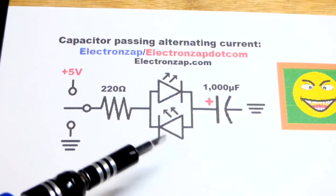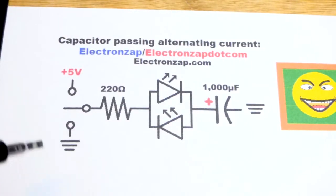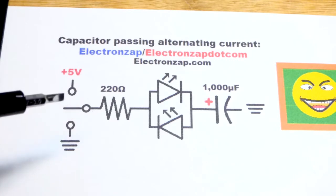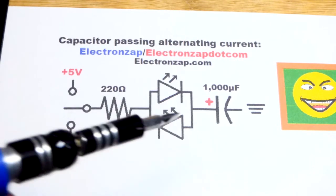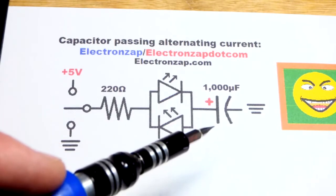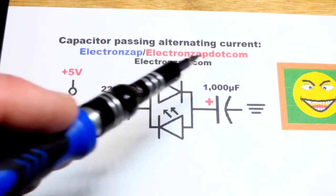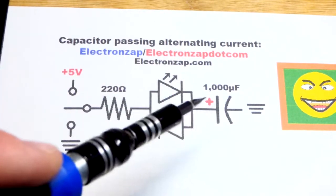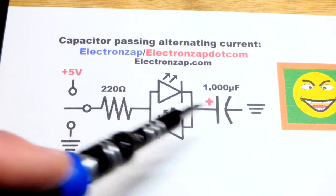So now in this video we're going to build a circuit. This is really just a demonstration circuit, not really practical at all, other than helping you visualize that a capacitor passes alternating current while blocking direct current.